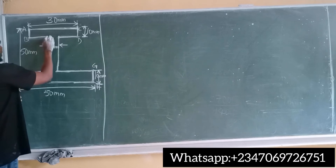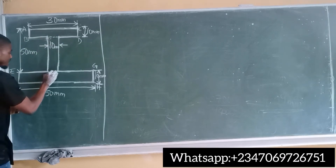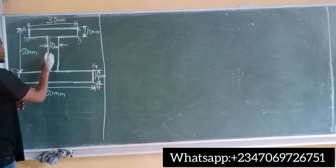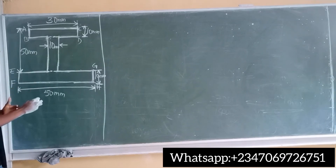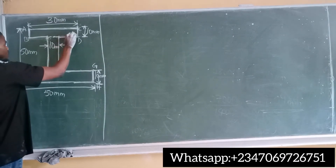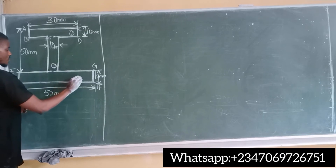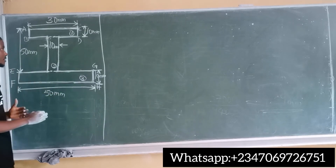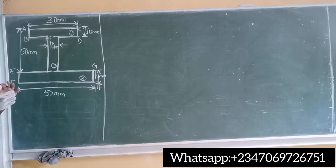If I cut here, I split the section into three different segments altogether. I can call this segment one, segment two, and segment three. This makes it a composite section.